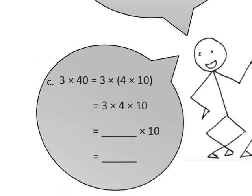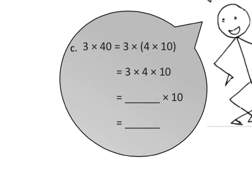Now let's practice with problem C. You've got the 40, which can be rewritten as 4 times 10. Then we can use our associative property to get 3 times 4 times 10, and that equals 12 times 10, which equals 120.